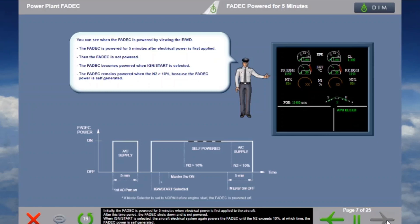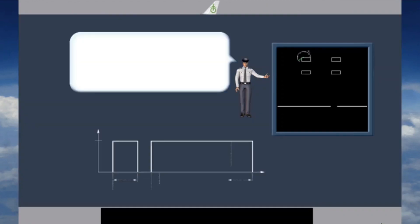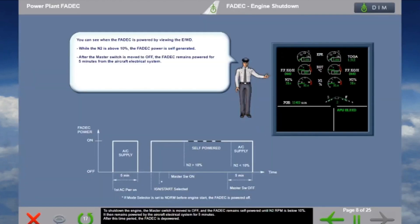Initially, the FADEC is powered for five minutes when electrical power is first applied to the aircraft. After this time period, the FADEC shuts down and is not powered. When ignition start is selected, the aircraft electrical system again powers the FADEC until N2 exceeds 10 percent, at which time FADEC power becomes self-generated.